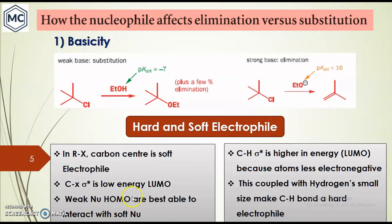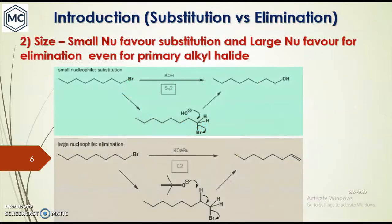We have to consider the hard and soft electrophile concept here. Usually in an alkyl halide, the carbon center is considered a soft electrophile and the C–X sigma bond is a low energy LUMO. Weak nucleophiles having a HOMO similar in energy to the LUMO of the C–X bond can interact with it. The C–H sigma anti-bonding orbital has a higher energy LUMO because hydrogen is less electronegative.